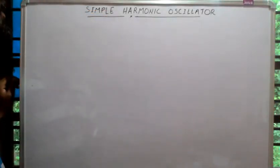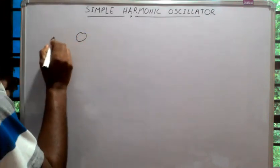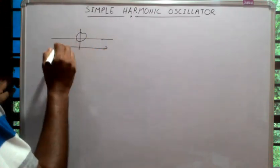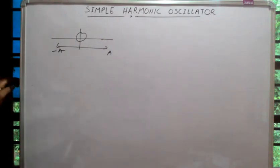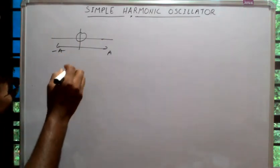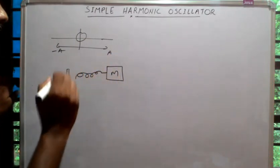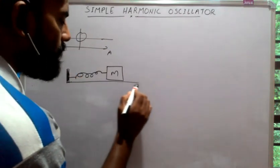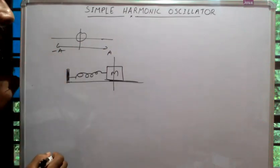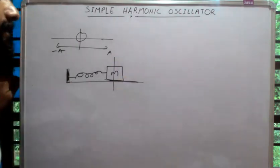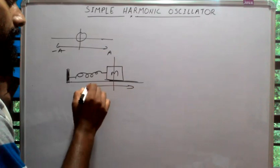Hi friends, today I am going to discuss one of the most important topics in physics: the simple harmonic oscillator. Consider a particle which oscillates back and forth about a mean position between limits minus a and plus a. If the displacement of this particle varies sinusoidally with time, then we say it executes simple harmonic motion. The simplest example is a block of mass m connected to a spring, which in turn connects to a rigid wall, placed on a frictionless surface. If we pull this block some distance, it will execute simple harmonic oscillation.